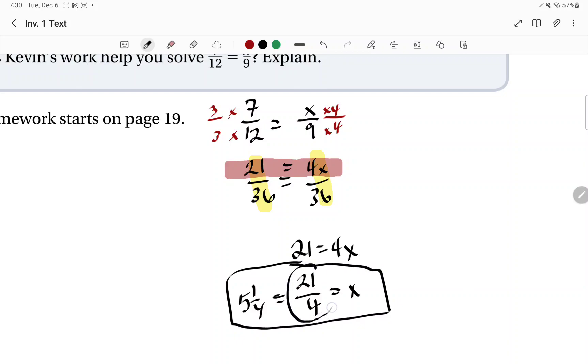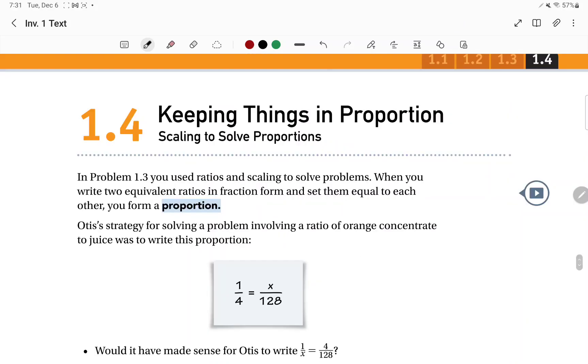Okay, you can keep it as an improper fraction at this point, as long as it's simplified. That is simplified, meaning there are no common factors with 21 and 4. And that is it with 1.4, scaling to solve proportions. Please remember, this is just one long story. Everything is connected. See you soon.